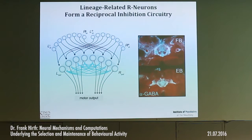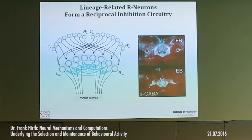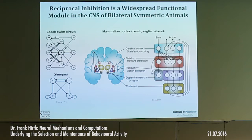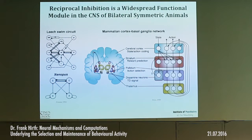So I showed you that these neurons derive from one single stem cell — they are lineage-related. I showed you that they form reciprocal connections, and that they are GABAergic, which argues for a reciprocal inhibition circuitry. For those of you who do modeling, reciprocal inhibition is a widespread functional model in the CNS of many animals, and it's often involved in synchronizing things — regulating and coordinating rhythmic activity such as behavior.